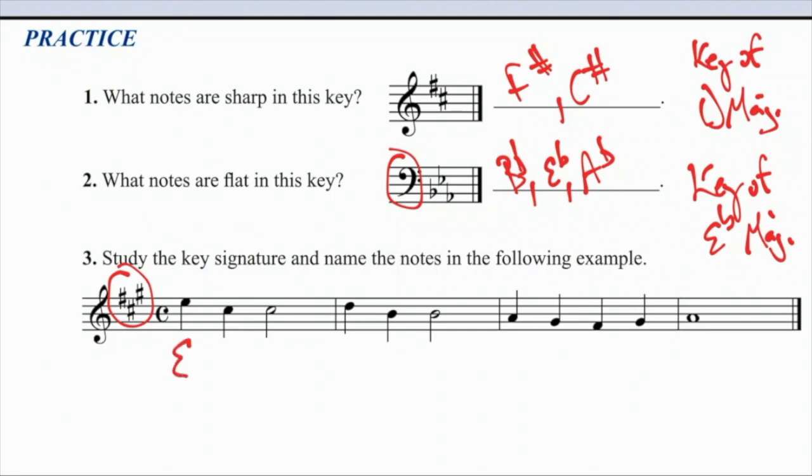E, C, but because of the key signature, it would be C sharp. Another C sharp, D, B, B, A.